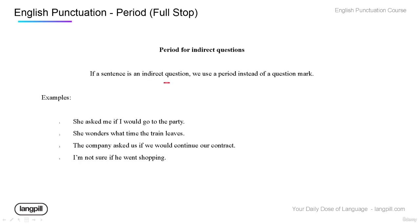If we're writing indirect questions — questions that aren't directly asked to someone, where someone is telling you what someone else asked them — you don't use a question mark; you use a period. For example: 'She asked me if I would go to the party.' Period. 'She wonders what time the train leaves.' Period. They sound like questions, but because we're saying someone else asked this, it's an indirect question and we use a period.